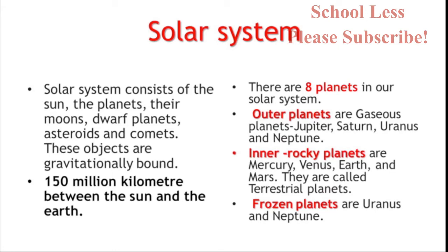The outer planets are Jupiter, Saturn, Uranus and Neptune. These are the gaseous planets. Uranus and Neptune are called frozen planets.